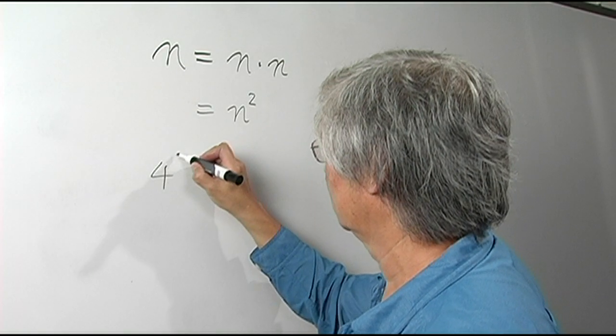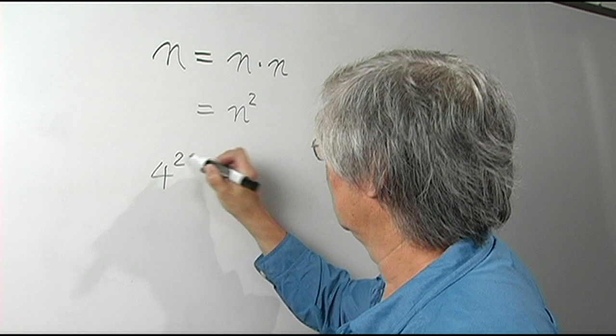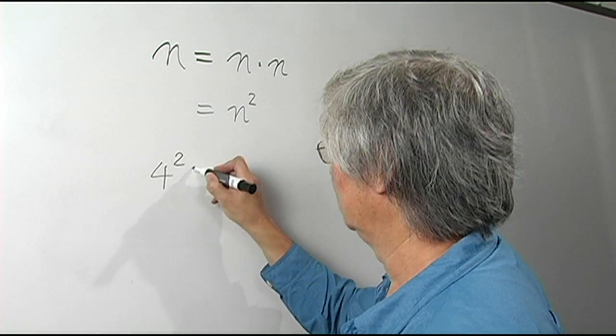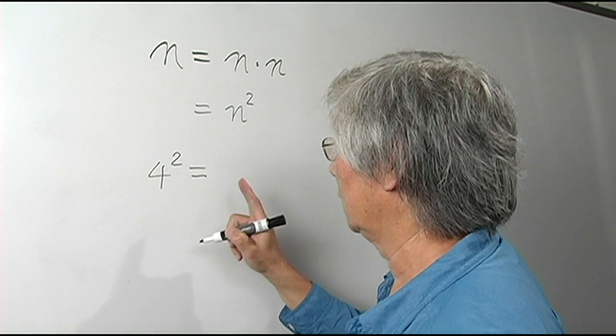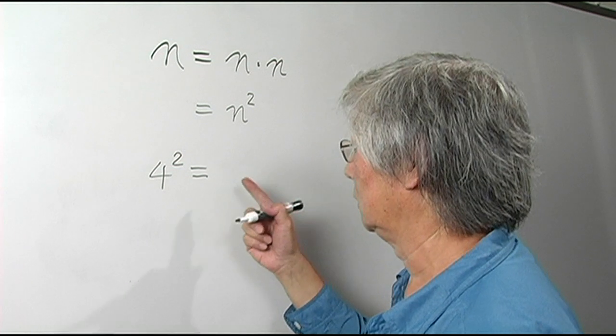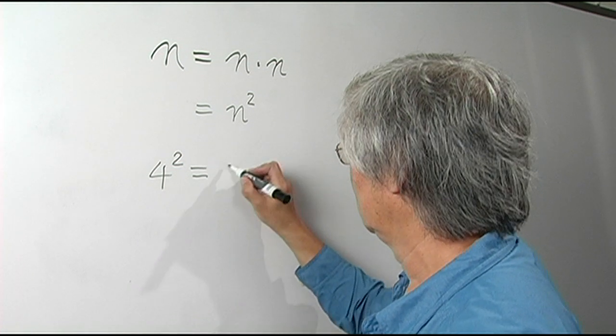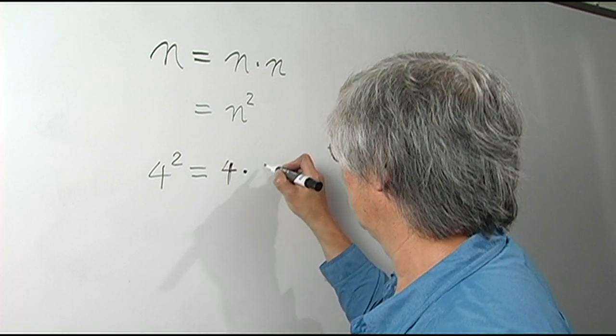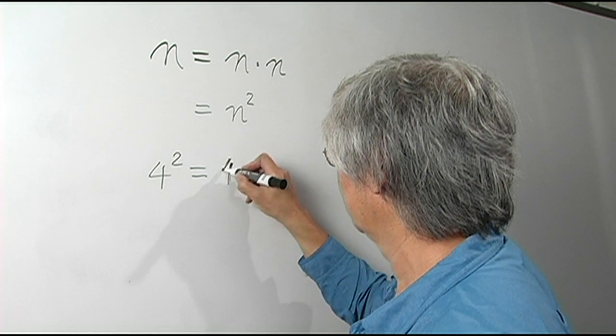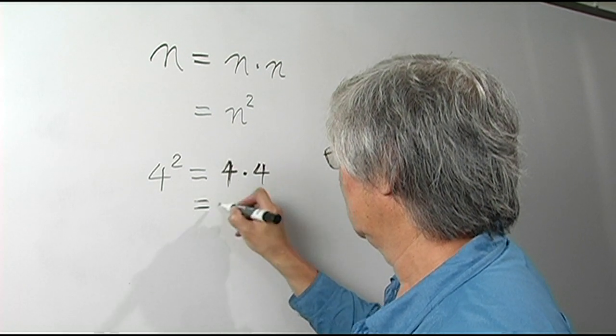Let's take an example that n equals 4 and we're going to raise it again, multiply it by itself 2 times. Now I'm going to come back and explain the phrase that I just used. This equals 4 times 4, or 16.